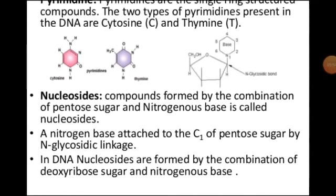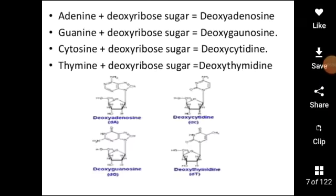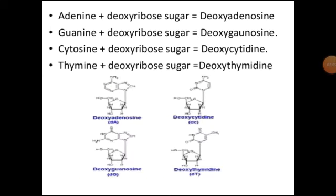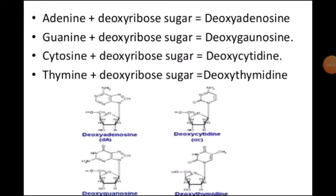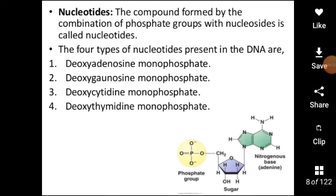Nucleosides are formed by the combination of deoxyribose and nitrogenous bases. Adenine joined with deoxyribose sugar forms deoxyadenosine. Guanine linked with deoxyribose sugar is called deoxyguanosine. Deoxycytidine is formed by cytosine and deoxyribose sugar, and deoxythymidine is formed by thymine and deoxyribose sugar.